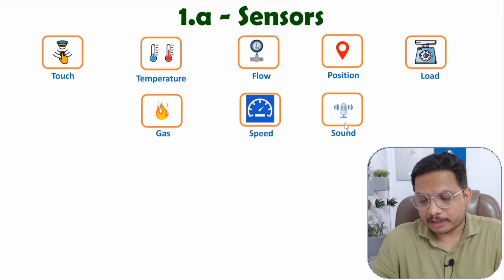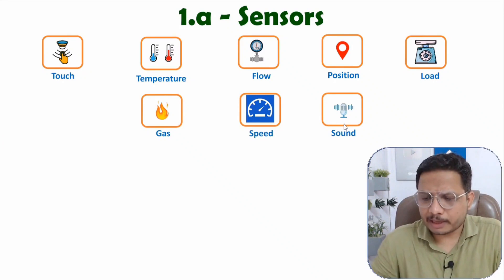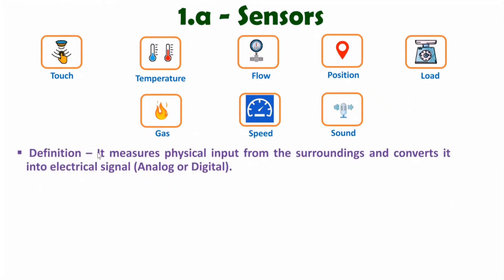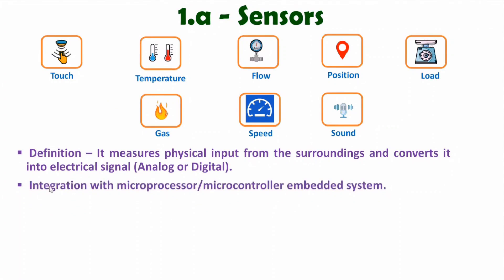A sensor is used to measure physical input from the surroundings and converts it into an electrical signal. That electrical signal can be either analog or digital, which determines whether the sensor is analog or digital. Sensors are integrated inside embedded systems, which may include a microcontroller or a microprocessor.